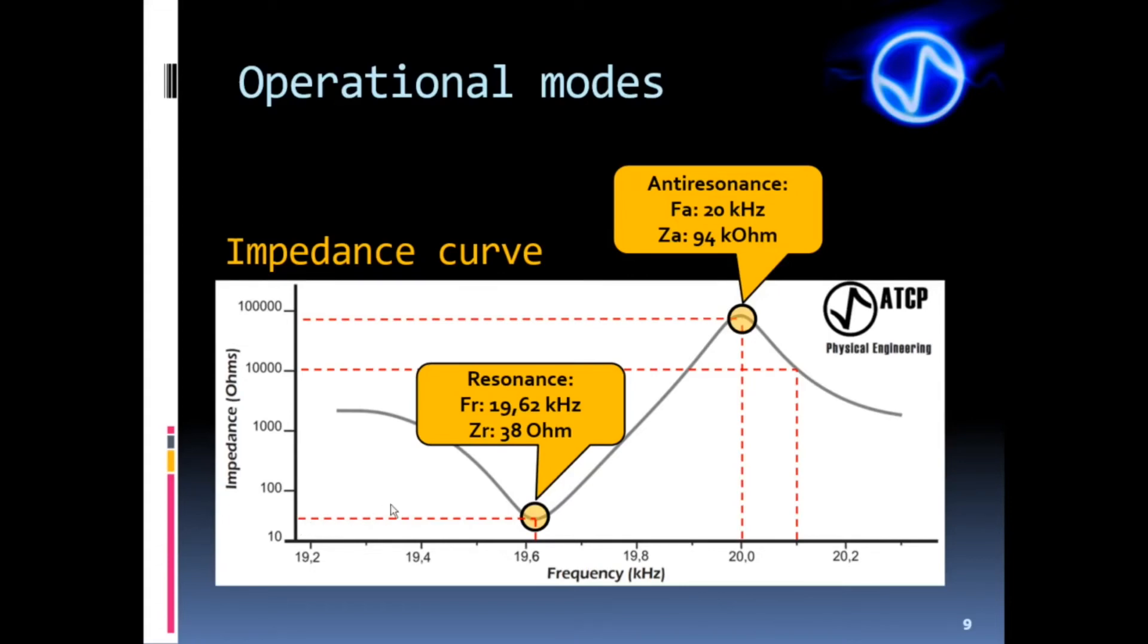The resonance frequency is the frequency at which the stack offers Zr. On the other hand, the anti-resonance impedance Za is the value of the highest impedance that the stack offers. And the anti-resonance frequency is the frequency at which the stack offers Za, or the maximum impedance.